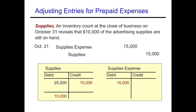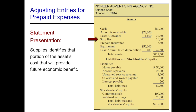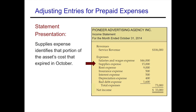On the balance sheet, the supplies account shows what we still have left to use — a future economic benefit of $10,000. The companion account on the income statement, supplies expense, shows the amount we have used up this period in October.